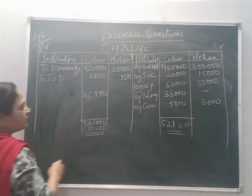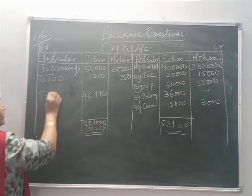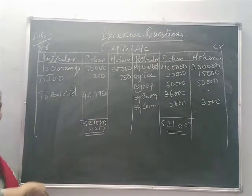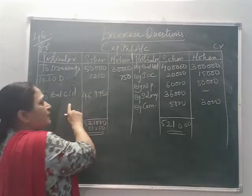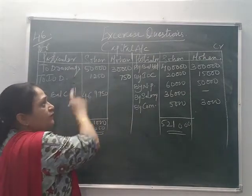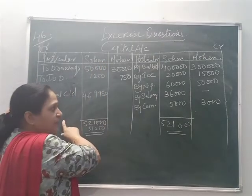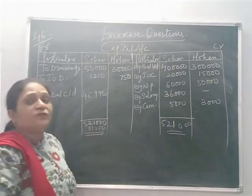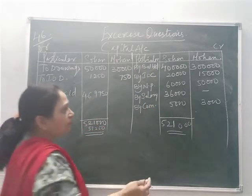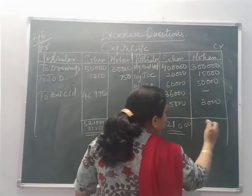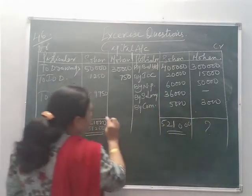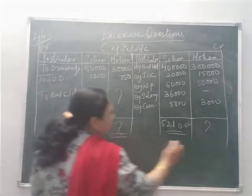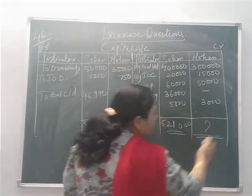4,69,750 is the closing balance of Sohan's fluctuating capital account — balance carried down on the debit side and balance brought down on the credit side. This is the opening balance of their capital accounts. Now you will close Mohan's account, find the figure, and close both sides on your own.